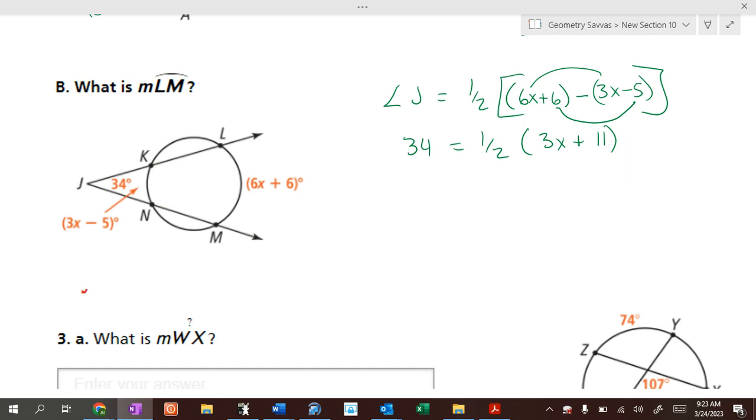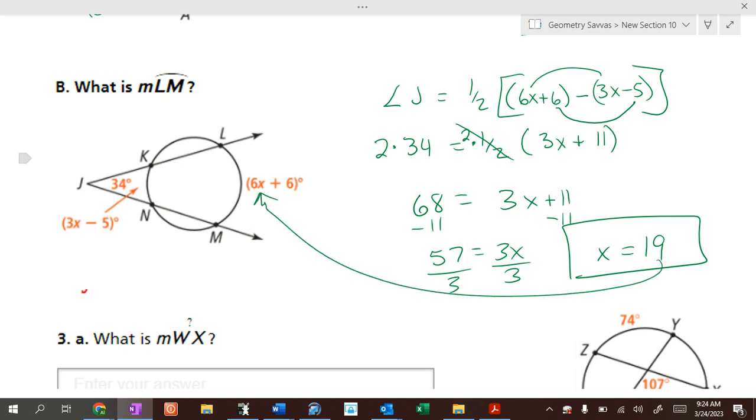Now, if you take half of 3 and half of 11, you get fractions, right? If there were even numbers, we'd just distribute the half through. I don't want to mess with fractions. So how can I get rid of my fractions? Multiply both sides by 2. So we get 68 equals 3x plus 11. Now I don't have any fractions because I just got rid of it. Now we just subtract minus 11, so 57 equals 3x divided by 3. X equals 19. So once you get 19, plug the 19 in there because it says what is the measure of arc LM. So 6 times 19 plus 6, 6 times 19 is like 114 plus 6 is 120.